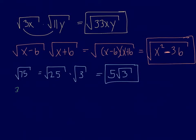Let's move on to cube roots. The cube root of 27x cubed: 27 is a perfect cube, so that gives us 3. And x cubed is also a perfect cube, giving us x. So the final answer is 3x.